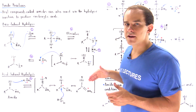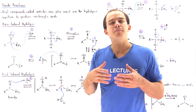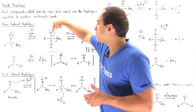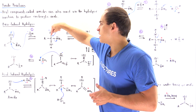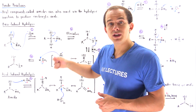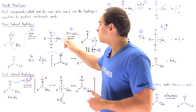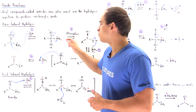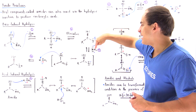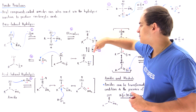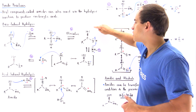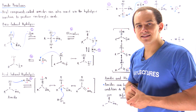In the second step we have an elimination taking place. As the pi bond between the oxygen and the carbon is reformed, we simultaneously eliminate the leaving group and form the NH2 anion, which contains two lone pairs of electrons, as well as a carboxylic acid.